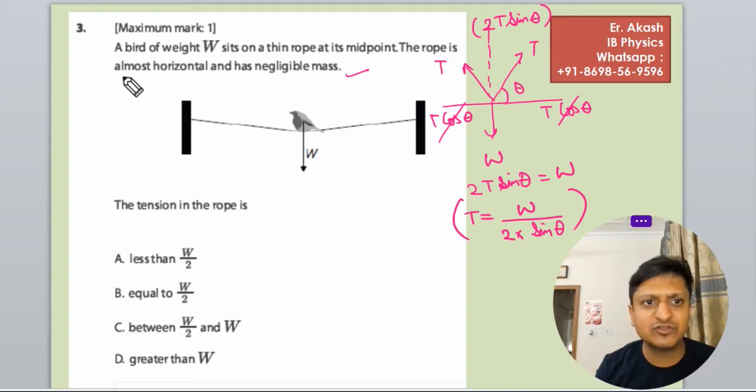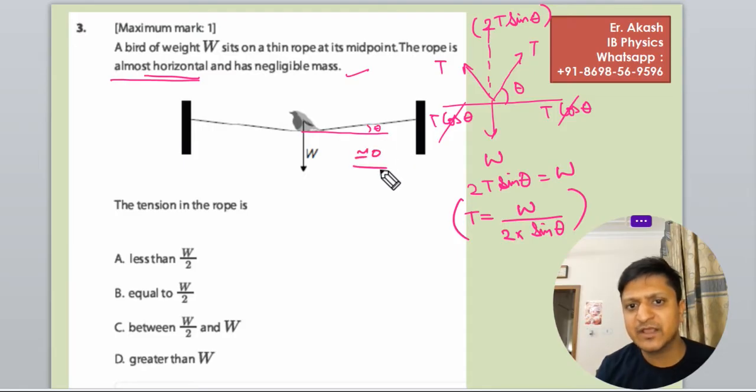The question says the rope is almost horizontal. Almost horizontal means that the theta angle that we have taken, this theta will be very, very near to 0. When sin theta, in sin theta, when theta is 0, then sin 0 equals to 0.